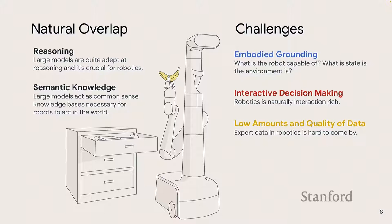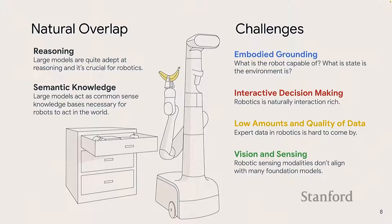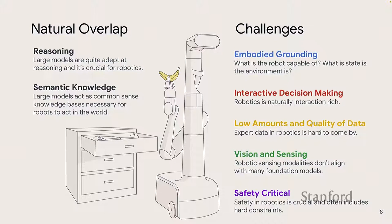On one side we have huge amounts of data; on the other side we have not only low amounts of data but often pretty low quality data — all teleoperation data, relatively slow and limited. Vision and general sensing modalities are slowly getting better in vision-language models but have traditionally not been an area of strength. And finally, safety is really important for robotics — you can't make the same mistakes that in language we might forgive. So these are not necessarily naturally put together, and there are a lot of open research challenges.